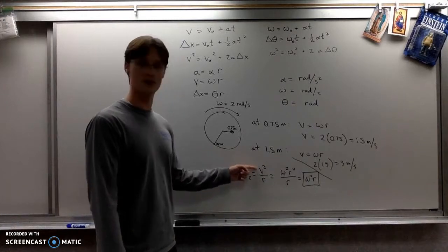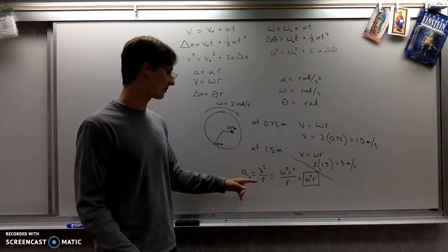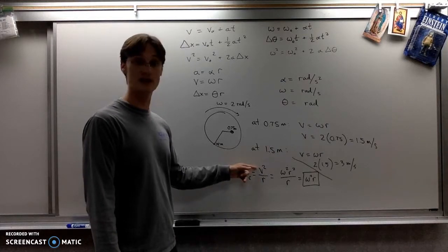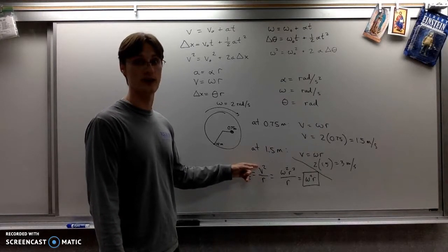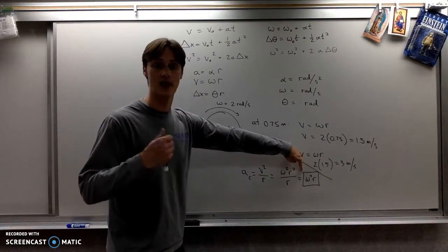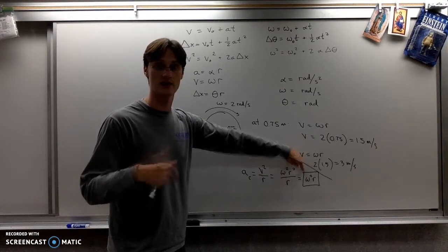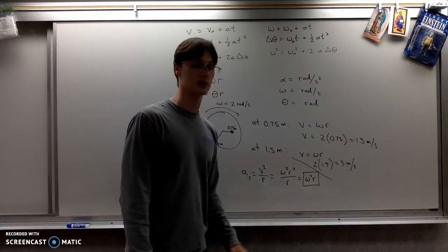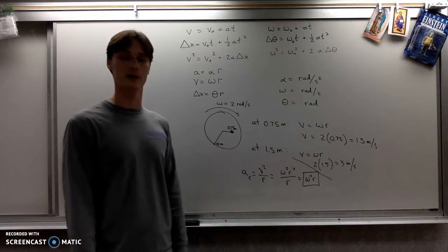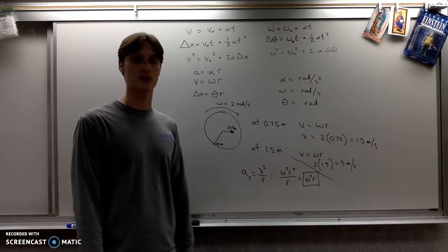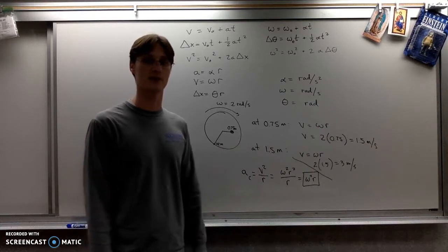So the reason why it doesn't work out maybe the way you would expect from this formula is V increases as you move outwards. And so when you put it in terms of angular velocity and the radius, the centripetal acceleration actually linearly increases as you move away from the center, which bears out with your experience with spinning platforms and things.